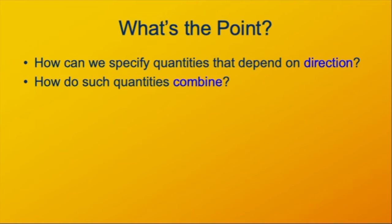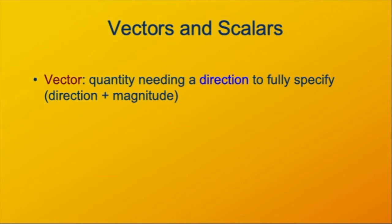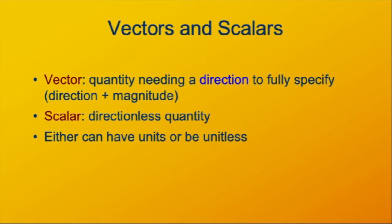The reason we're doing this is because a lot of physical quantities have direction. Here we have a way to quantify the direction and also to talk about how these types of quantities with directions combine with each other. A vector is a quantity that needs a direction to fully specify it. A vector basically has two pieces of information: a direction and a magnitude, which is how big it is. A scalar doesn't have a direction. Both vectors and scalars can have units, or they can be unitless.